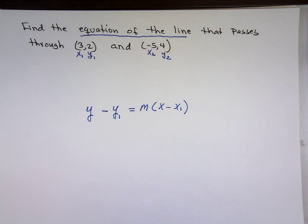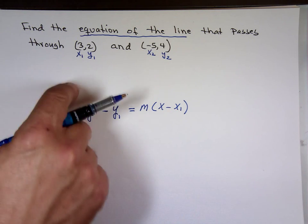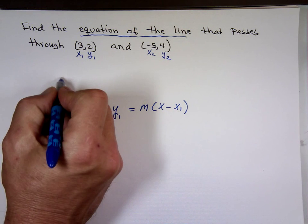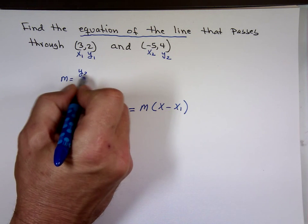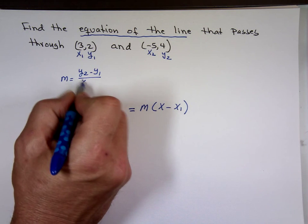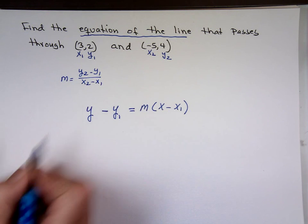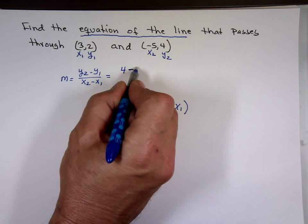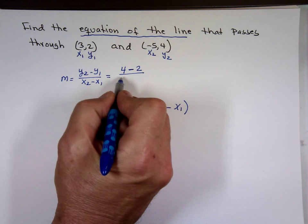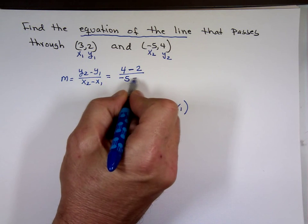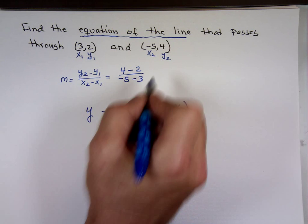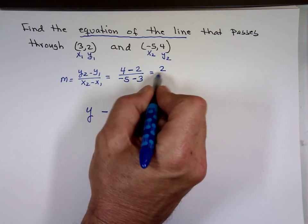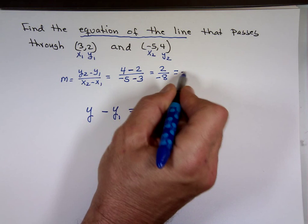I have a problem — I don't have m. So I need to find the slope first. The slope is y sub 2 minus y sub 1 over x sub 2 minus x sub 1. That's 4 minus 2 over negative 5 minus 3, which gives 2 over negative 8, which simplifies to negative one-fourth.